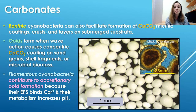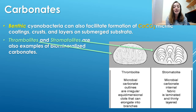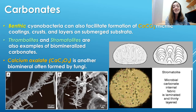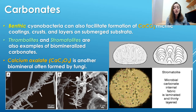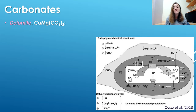Ooids are one example of these calcium carbonate coatings that form by wave action causing concentric calcium carbonate coating on sand grains, shell fragments, or microbial biomass. What the cyanobacteria do is contribute EPS — their extracellular polymeric substances — to bind calcium ions and become nucleation sites for calcium carbonate growth, while also increasing pH. Cyanobacteria are also known to form bacterial mats preserved as stromatolites or thrombolites. Additionally, calcium oxalate can form by the help of fungi, as fungi release organic acids such as oxalic acid that react with Ca²⁺ ions to form calcium oxalate.